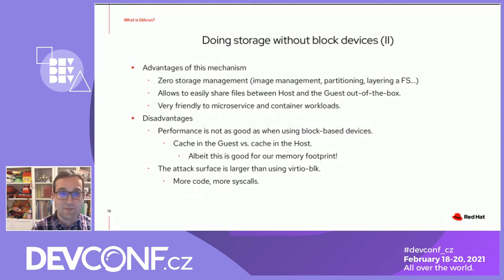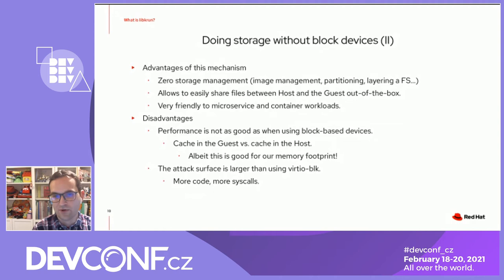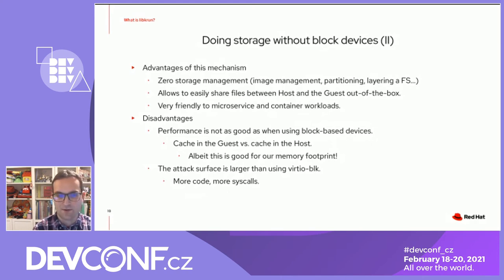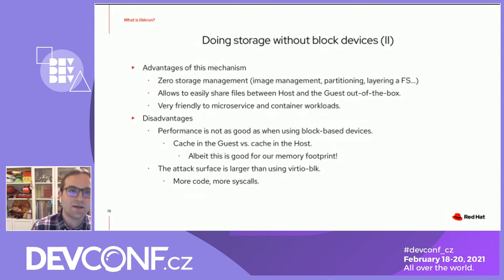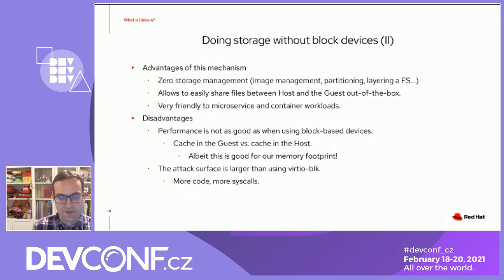As for the disadvantages, we can say that performance is not as good as when using block-based devices, mainly because the guest is not able to rely as much on its own file system cache as it would be able to do with a block-based device, and it needs to communicate with the host more frequently for data. On the other hand, this is actually good for keeping memory footprint low, because if the guest is using a significant amount of memory as file system cache, that memory cannot be returned to the host. Another disadvantage is that the attack surface is larger than using VirtioBlock because we have more code and more syscalls.